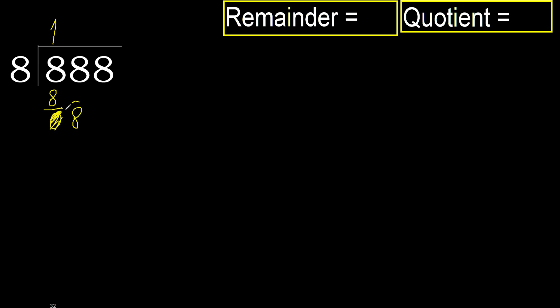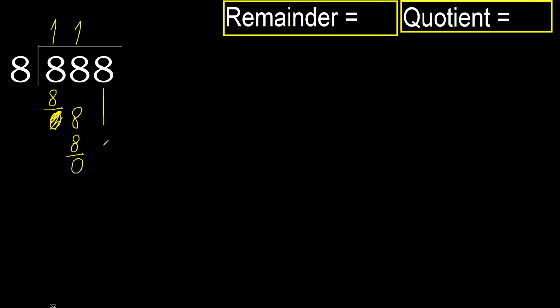Bring down the next digit: 8. 8 multiplied by 1 is 8, is not greater. Subtract. Next.